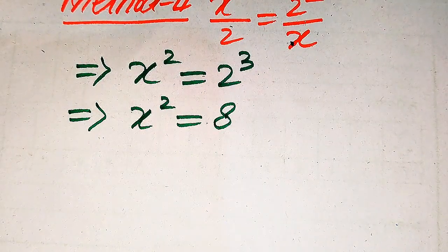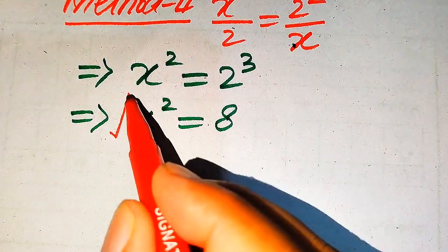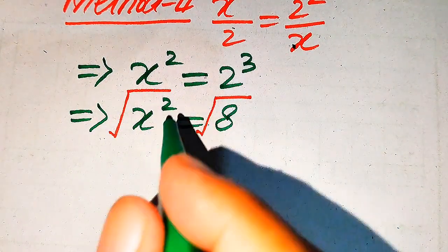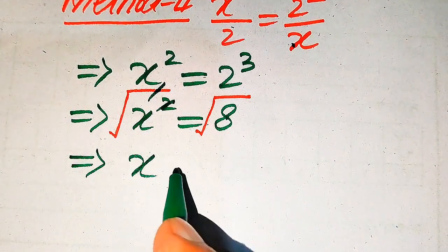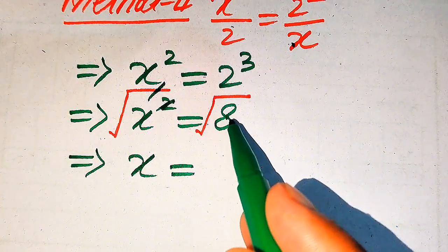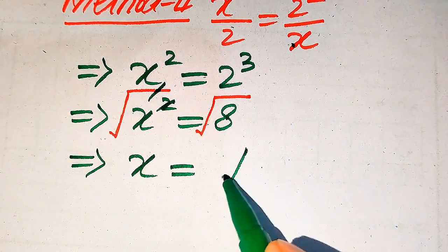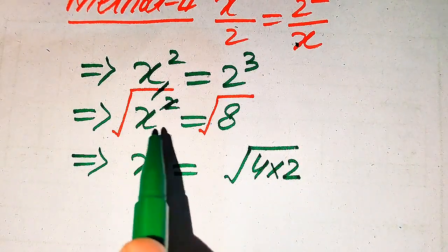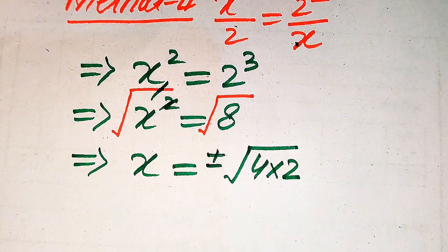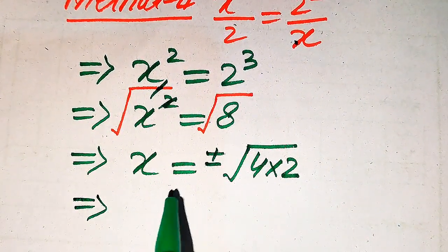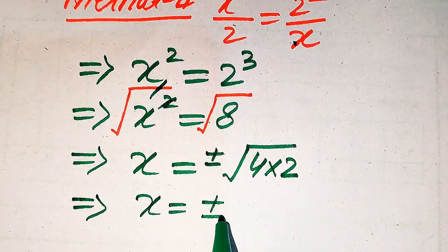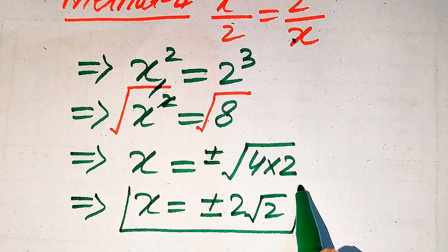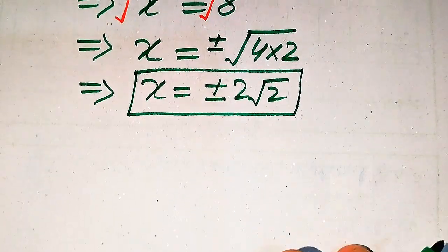To remove the square sign, we take the square root on both sides. This gives us x equals plus or minus square root of 8. We write 8 as 4 times 2, and since square root of 4 equals 2, we get x equals plus or minus 2 times square root of 2. These are the two roots from the second method, which are the same as from the first method.